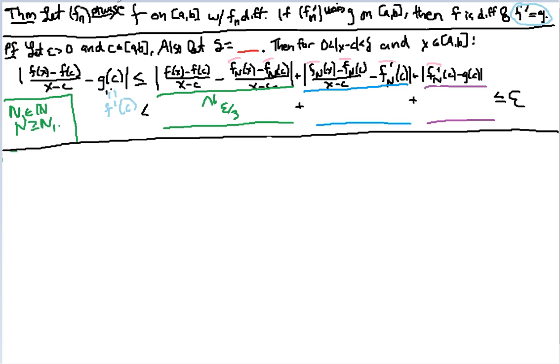Where are we? What are we doing? We have this theorem: fn goes to f pointwise, fn is differentiable with f prime of n going uniformly to g, then f prime is going to equal to g.